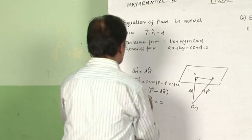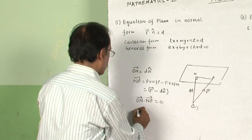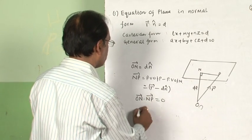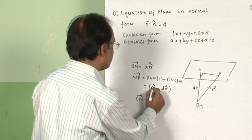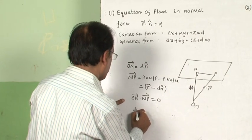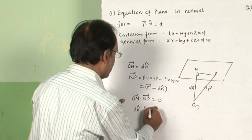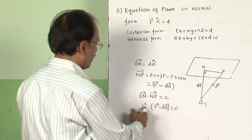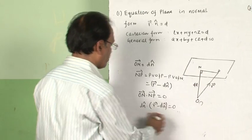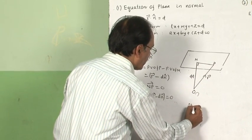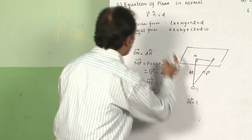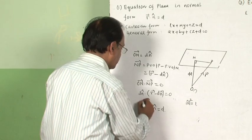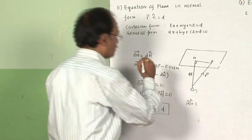By substituting, D·n̂ dot (r minus D·n̂) is equal to 0. When we multiply, we get the magnitude of n̂ squared, which equals 1, and we get the equation r dot n̂ equals D. This is the equation of the plane in normal form.